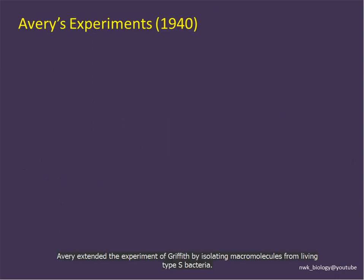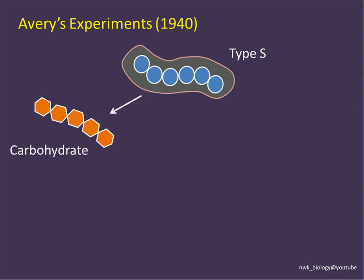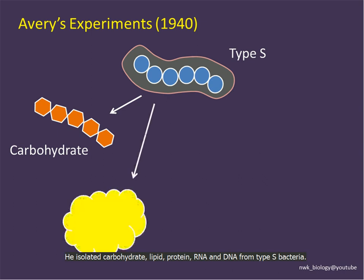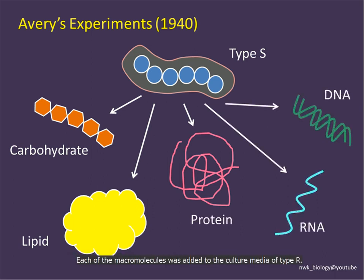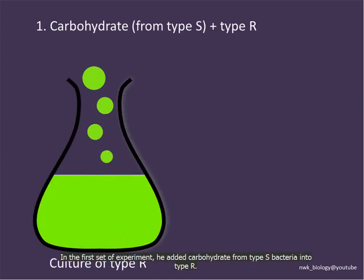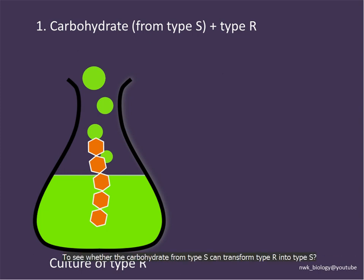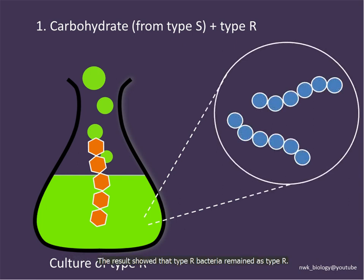Avery extended Griffith's experiment by isolating macromolecules from living type S bacteria. He isolated carbohydrate, lipid, protein, RNA, and DNA from the type S bacteria, and each macromolecule was added into a type R bacteria culture medium. In the first set of experiments, carbohydrate from type S bacteria was added, but type R bacteria remained as type R.